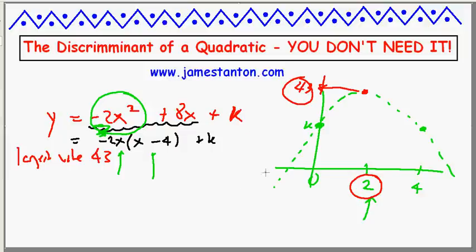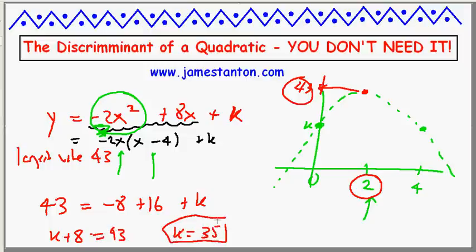So basically, it tells me when I put in x equals 2, I want y to be 43. Let's plug that into the equation and see what happens. Y is 43 should equal putting in x equals 2. Negative 8 plus 16 plus k. That tells me k minus 8, that k plus 8, sorry, is 43. That tells me k better be 35.